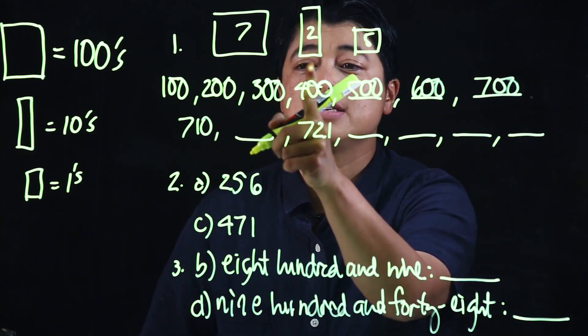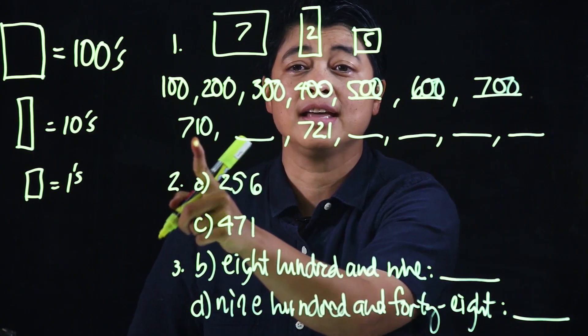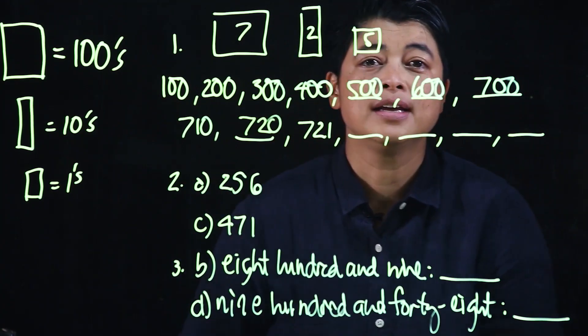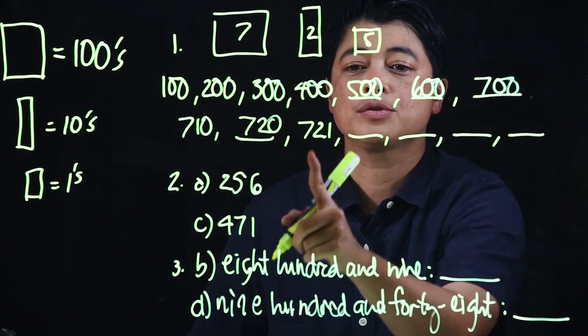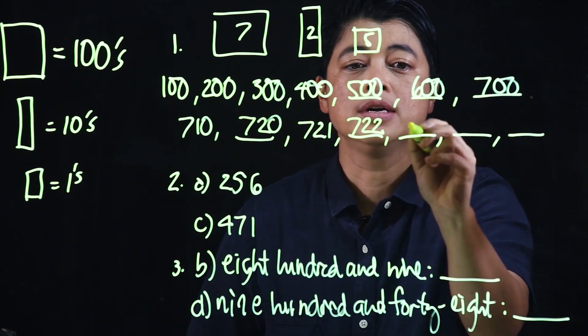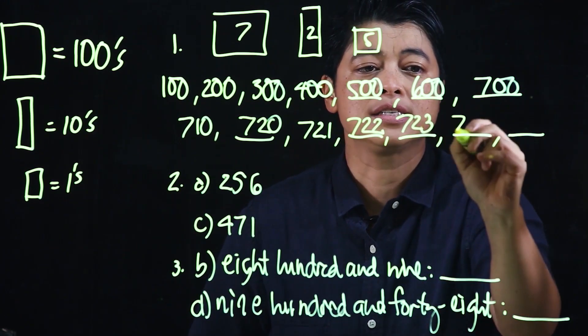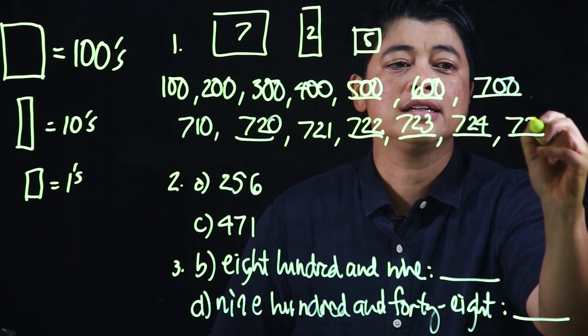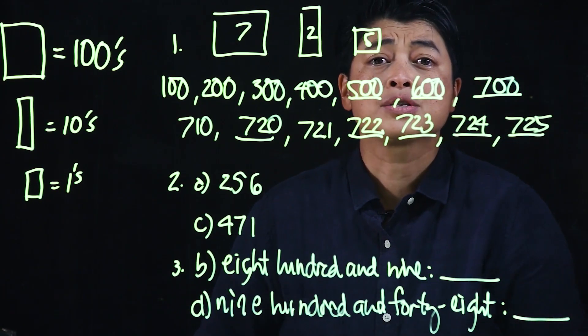Then we have two of these, which means if this is 710, the next will be 720. Then we have five of these, which means from 721, we skip to 722, 723, 724, and 725.